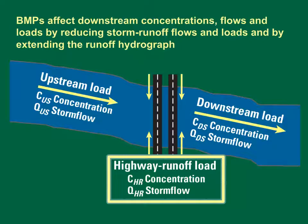BMPs affect downstream flows and loads by reducing storm runoff concentrations, flows and loads, and by extending the runoff hydrograph. This schematic diagram shows a stream and a hypothetical road crossing. The upstream concentrations, flows and loads are on the left, the highway variables are in the middle, and the downstream variables are shown on the right. The downstream flows and loads are the sums of the upstream and highway flows and loads. The downstream concentrations are the downstream loads divided by the downstream flows.